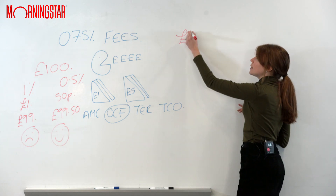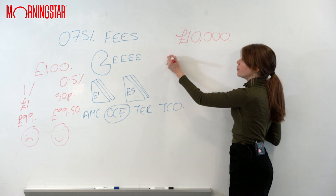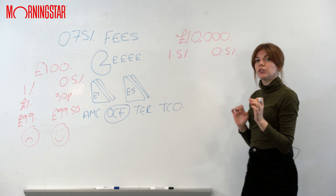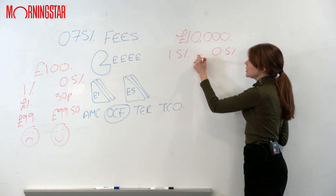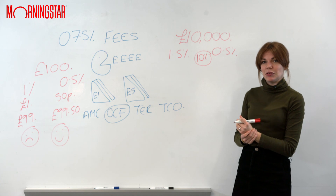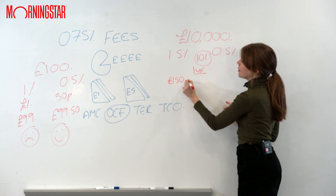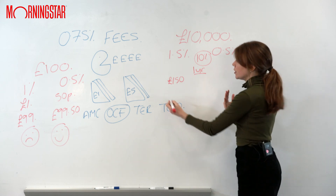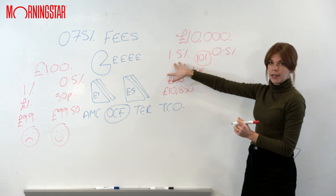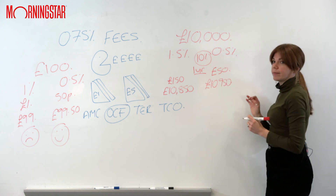Let's have a look at another example. We're going to have £10,000 invested in a fund — one charging 1.5% and one charging 0.5%, and we'll assume the fund grows by 10% every year. After one year, the person in the 1.5% fund has paid £150 in charges, so what they actually get back is £10,850 — that's their 10% growth minus charges. The person in the 0.5% fund only paid £50 in fees, so they get back £10,950. Happy customer.